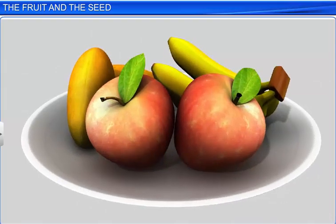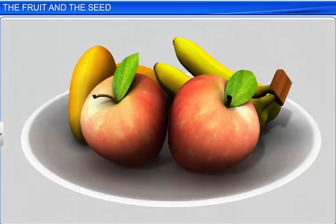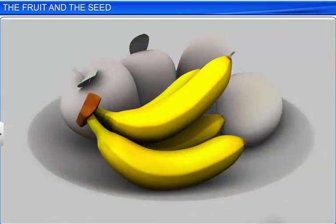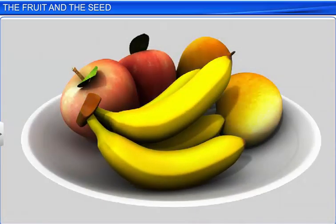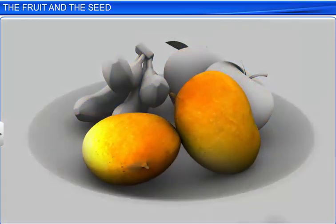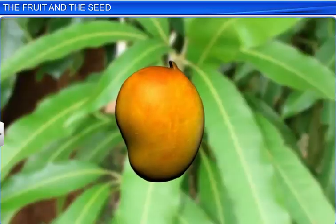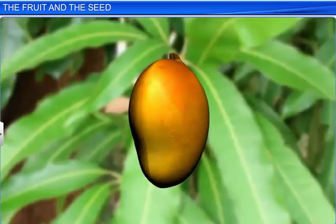The word fruit makes one think of an apple, banana, or a mango. However, in biology, the term fruit has a much broader meaning. It is a fertilized ovary with seeds.